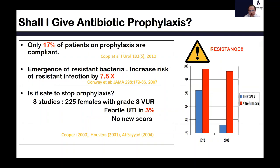Should I give prophylactic antibiotics? Before answering, consider: only 17% of patients prescribed prophylaxis are actually compliant. Many studies have found emergence of resistant bacteria, with a 7.5-times increased risk of resistant infections in patients on prophylaxis. Is it safe to stop prophylaxis? In kids with grade 3 VUR, stopping prophylaxis altogether did not increase febrile UTI — it was found in only 3% of the cohort with no new scars.